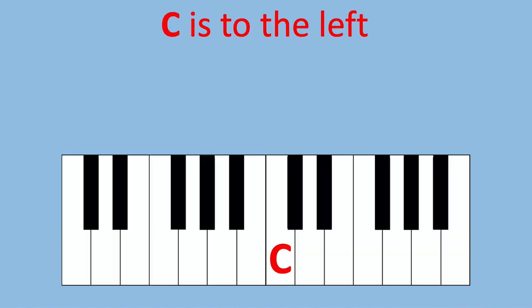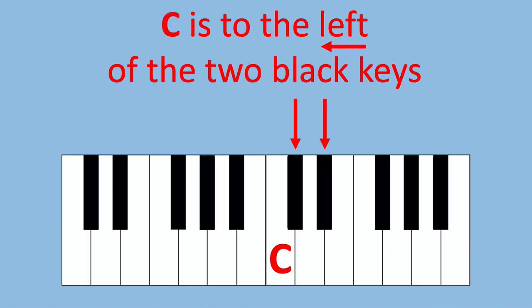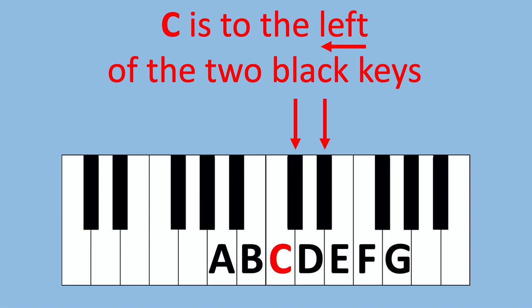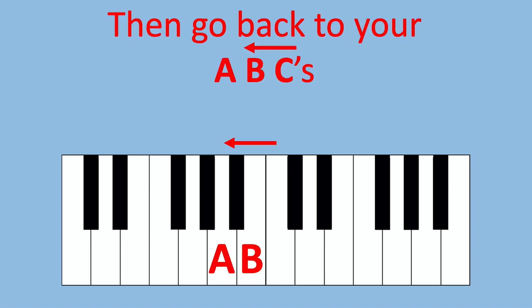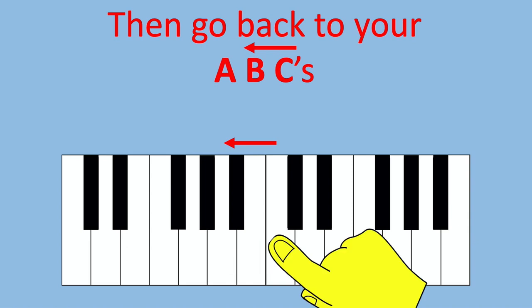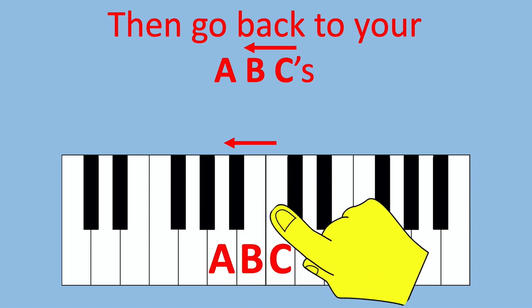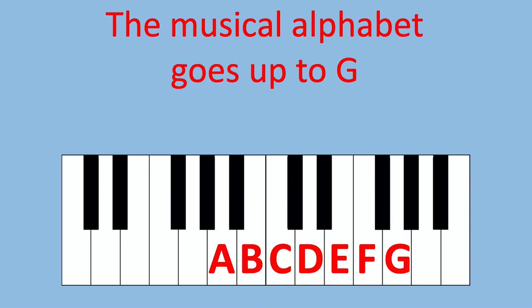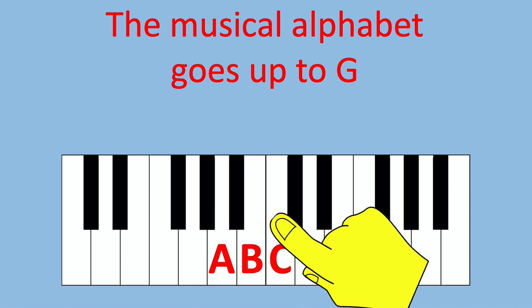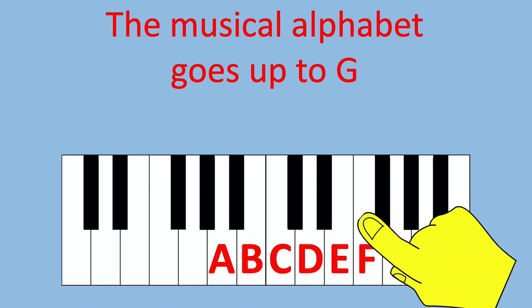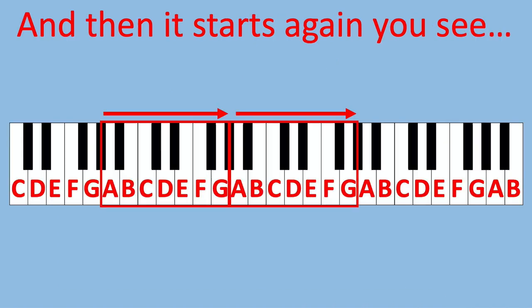C's to the left of the two black keys. Then go back to your ABC's. The musical alphabet goes up to G, and then it starts again you see.